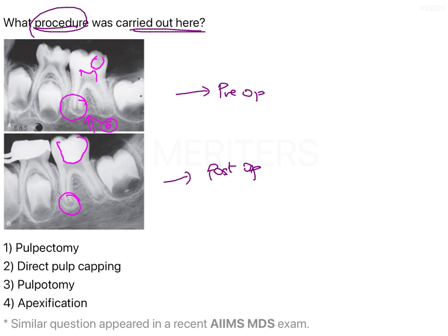So the procedure most likely carried out in this situation is a pulpotomy. Pulpotomy is a pulp therapy usually done when the infection or carious lesion is restricted to the coronal pulp. The radicular pulp is vital and healthy, and it is retained to allow root development to take place — especially in a young immature tooth where root apical closure has not yet been achieved.